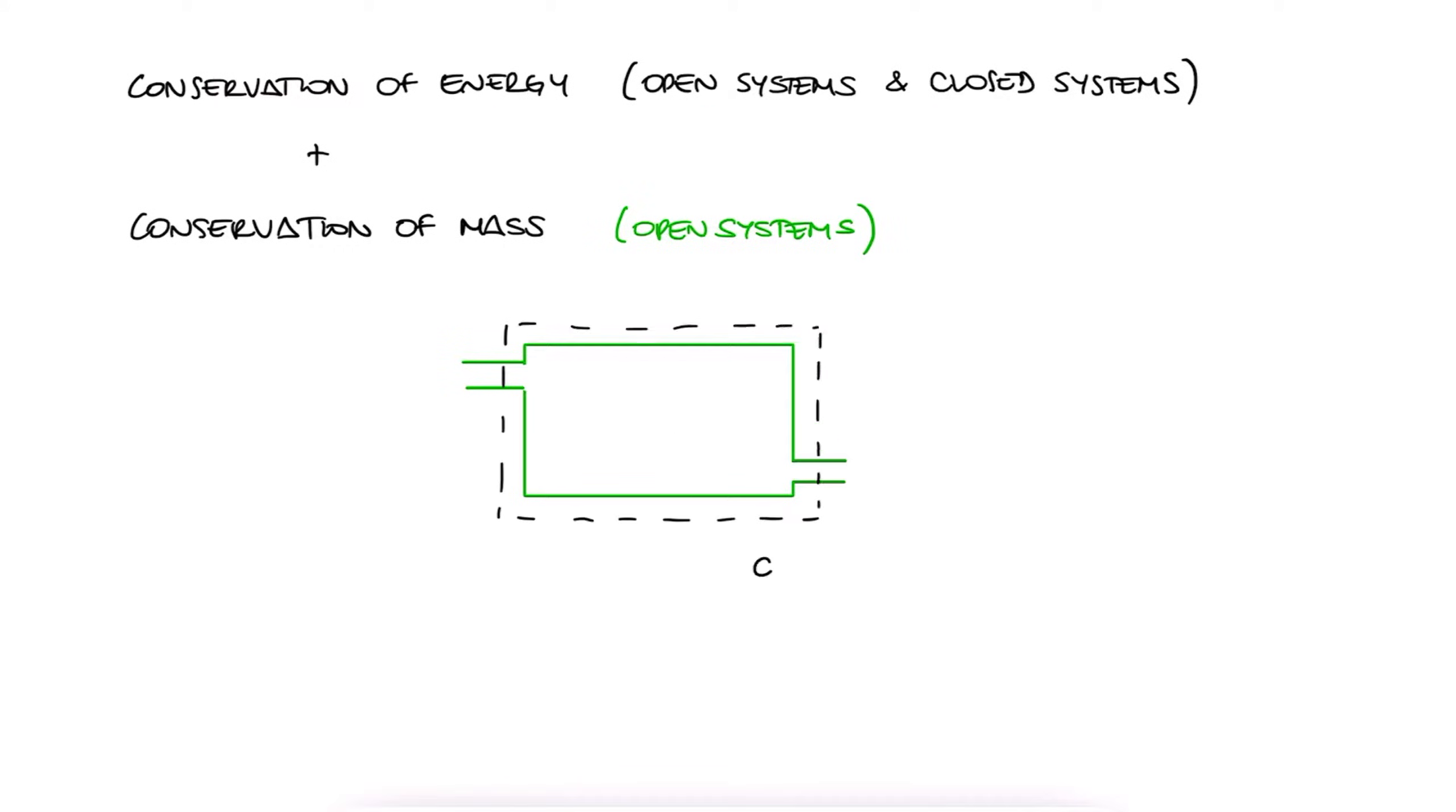For any control volume of an open system, we will have mass coming in, Mi, and mass coming out, Me, or mass exiting, hence the subscript E.